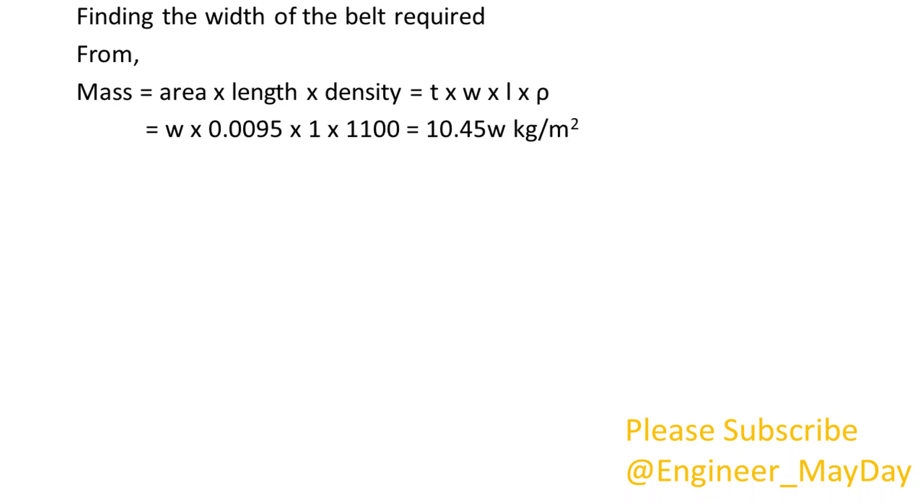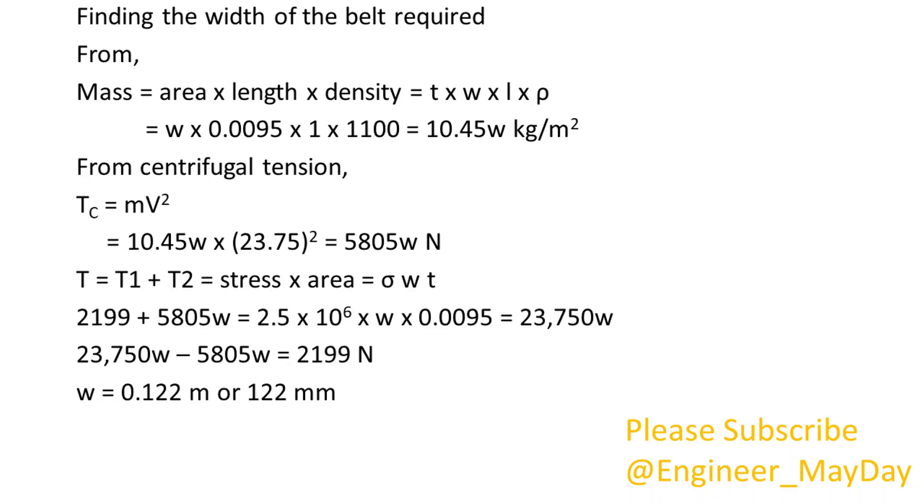Finding the width of the belt required. From mass equals area times length times density, mass equals 10.45 W kilograms per squared meter. From centrifugal tension, Tc equals 5805 W newtons. Thus width W equals 122 millimeters.